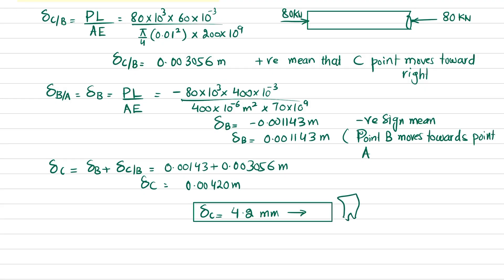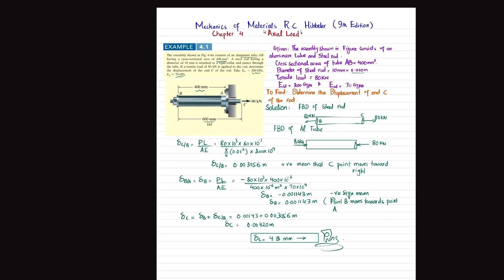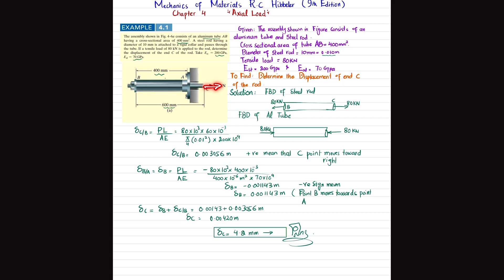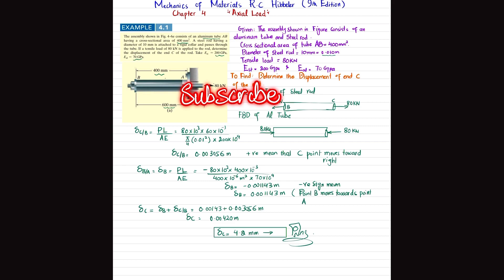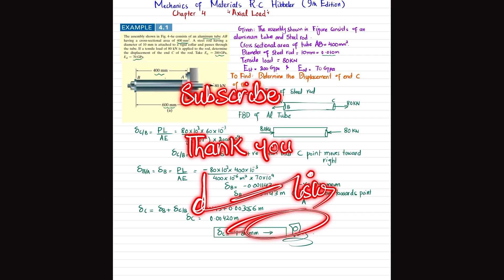This is the answer: due to the load of 80 kilonewtons, point C moves 4.20 millimeters away from its original position. That was all about example 4.1. I hope you enjoyed this video. If you're new to my channel, please subscribe and press the bell icon to get notifications about my latest videos. If you have any questions, you can ask in the comment section. Thank you for watching.